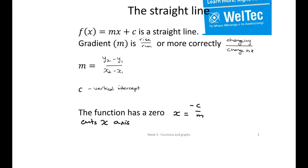This is the vertical intercept and you really need to remember this is where x equals zero. And for the zero, it's where y is equal to zero.